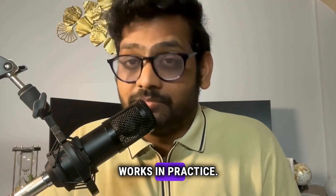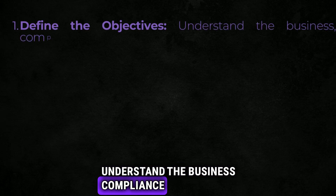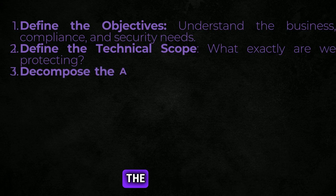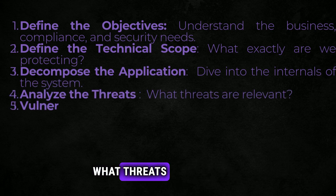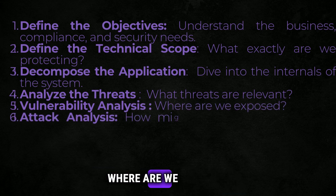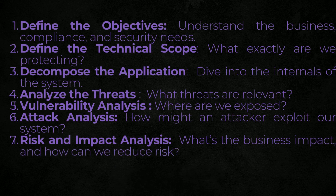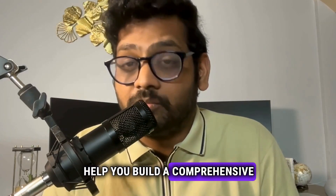Now let's talk about how PASTA works in practice. It's broken down into seven stages, each building upon the last, guiding you through the entire process from understanding your business objectives to identifying and mitigating risks. Here's the breakdown: Stage 1 — define the objectives: understand the business, compliance, and security needs. Stage 2 — define the technical scope: what exactly are we protecting? Stage 3 — decompose the application: dive into the internals of the system. Stage 4 — analyze the threats: what threats are relevant? Stage 5 — vulnerability analysis: where are we exposed? Stage 6 — attack analysis: how might an attacker exploit our system? Stage 7 — risk and impact analysis: what's the business impact and how can we reduce it? Each of these stages provides clear instructions that help you build a comprehensive and reliable threat model.